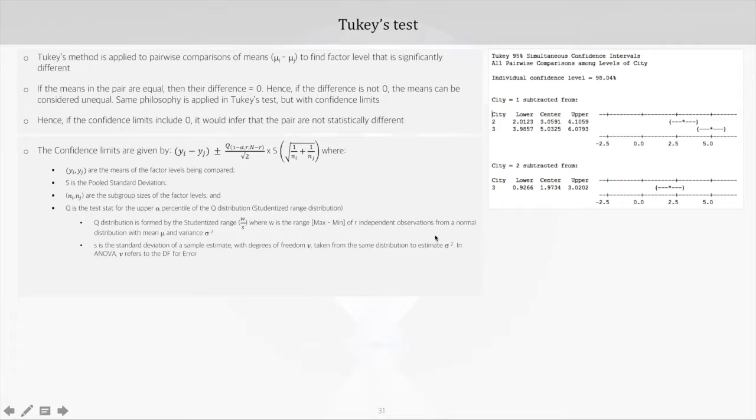The sample is taken from the same normal distribution with an objective to estimate sigma squared, which is the population variance. In ANOVA, nu refers to the degrees of freedom for the observations or degrees of freedom for error, which we've already seen in the ANOVA table. To get the critical q stat, we need to rely on the q distribution table as usual.